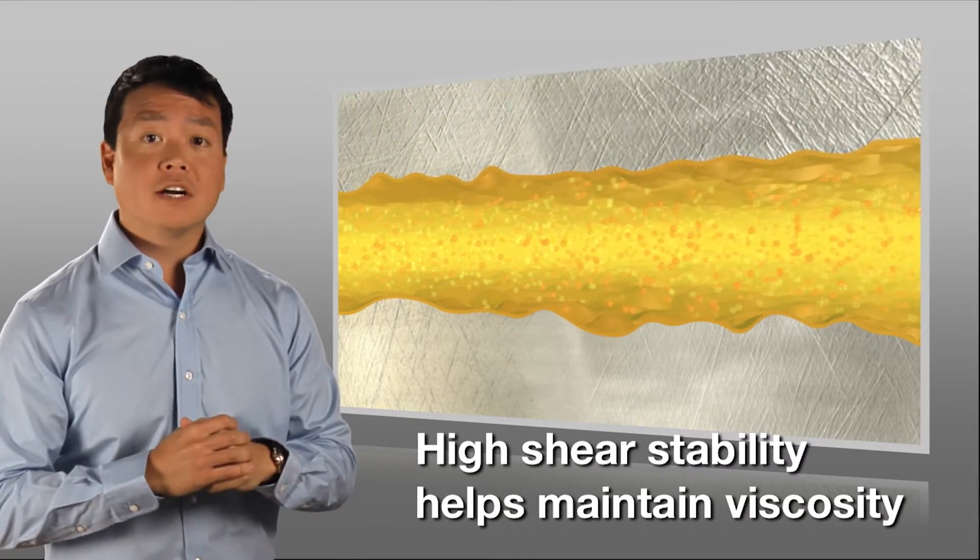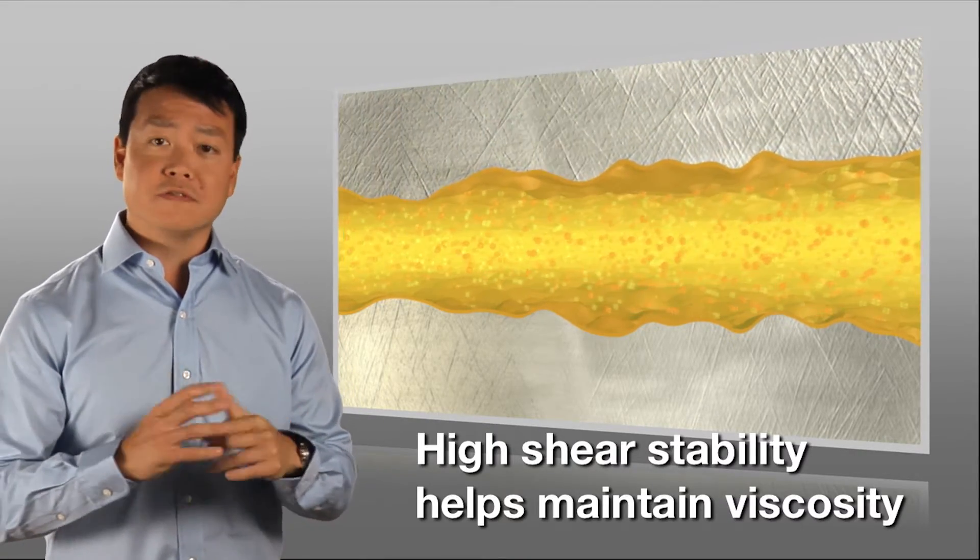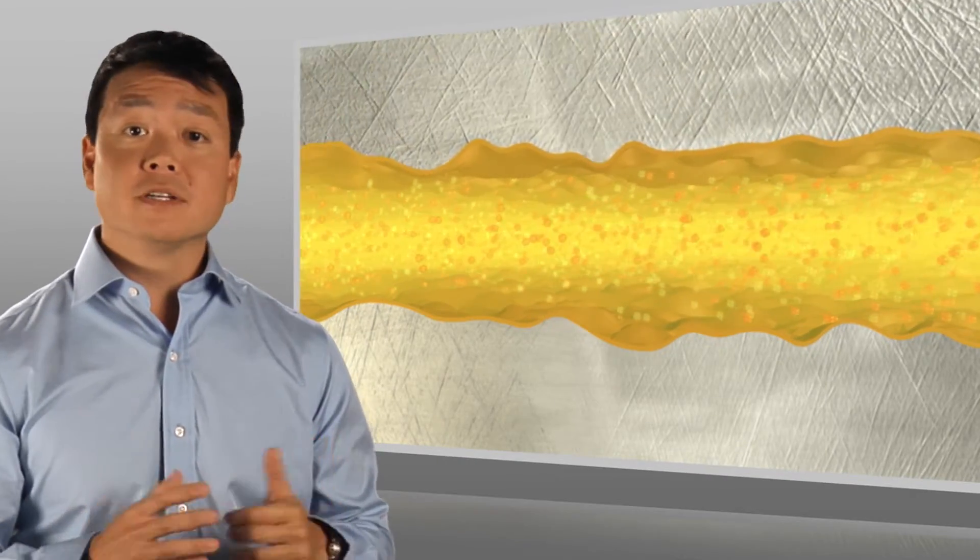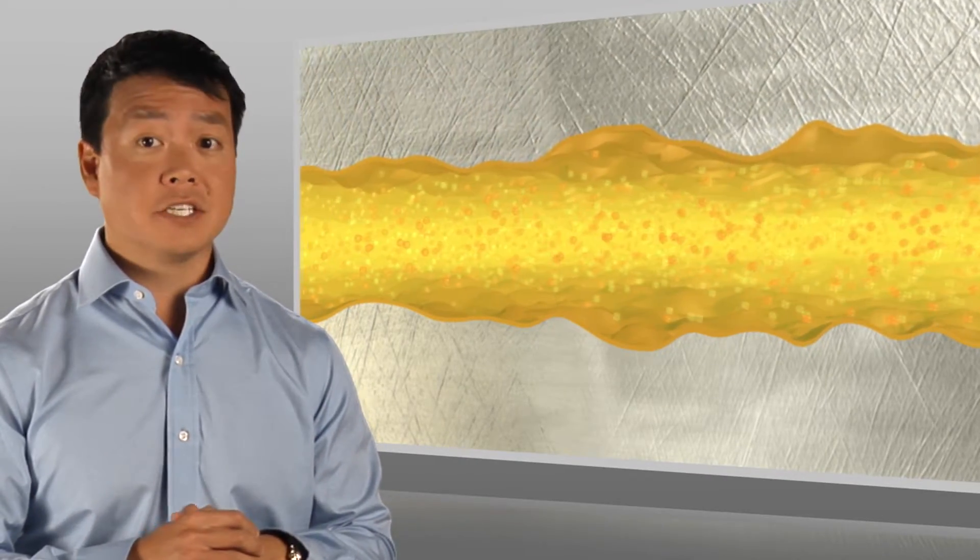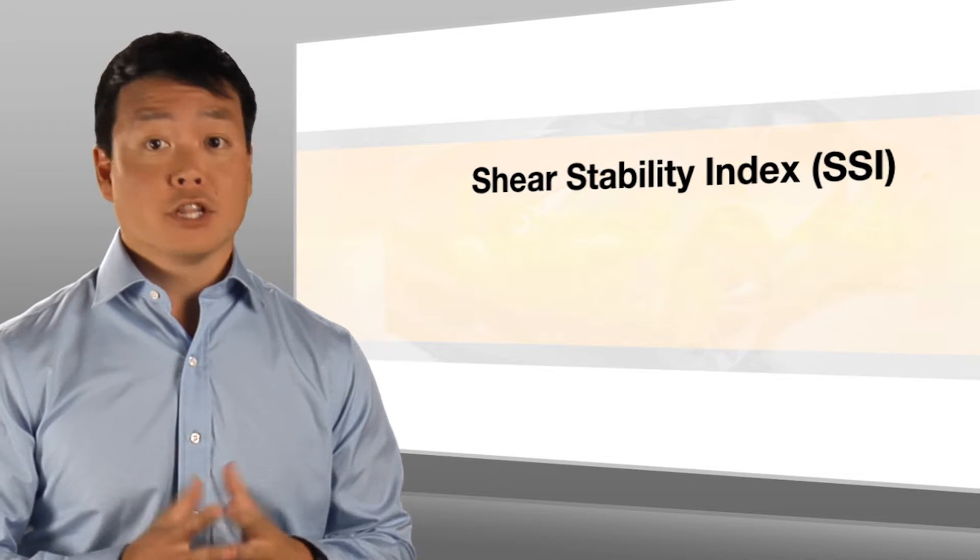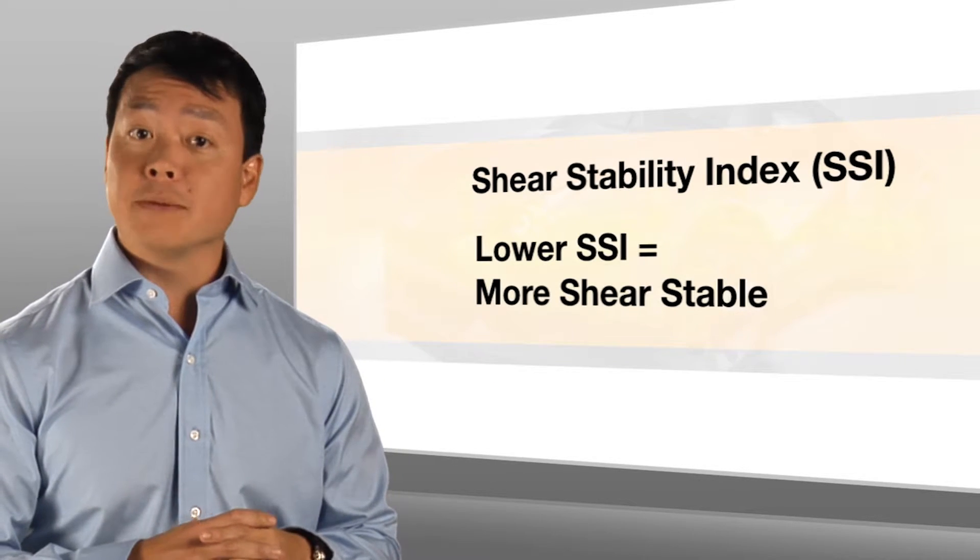Viscosity modifiers with high shear stability reduce this effect and help the oil maintain its viscosity. The shear stability is indicated by the viscosity modifier's shear stability index, or SSI. The lower the SSI, the more shear stable the oil is.